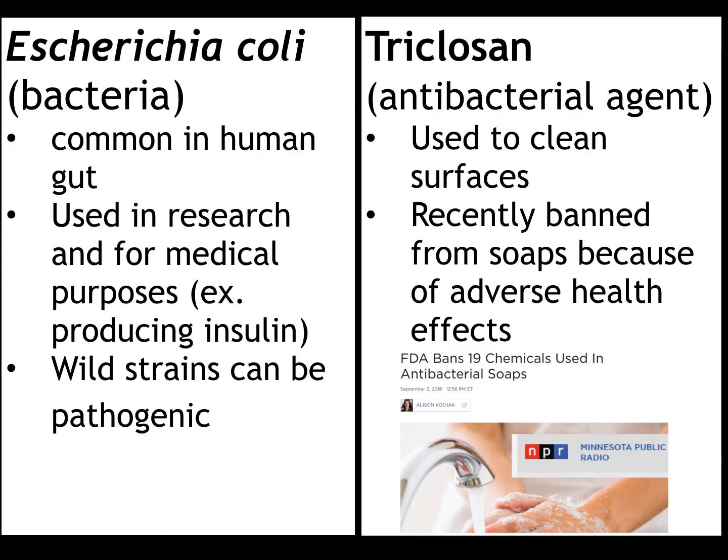Escherichia coli is a bacteria that is commonly found in the human gut. It is used in research and for medical purposes, such as for producing insulin. However, wild strains can be pathogenic.